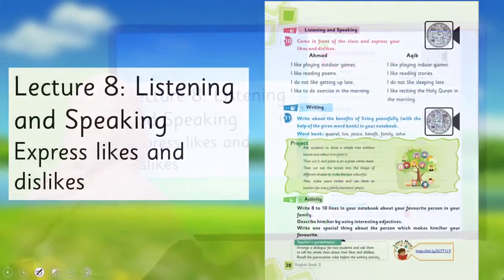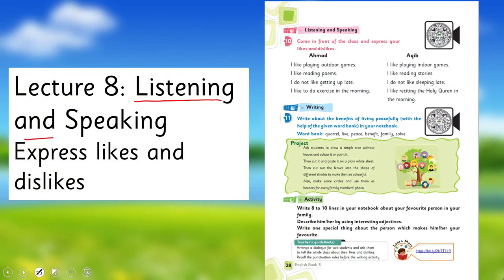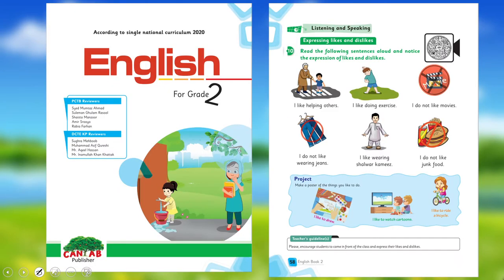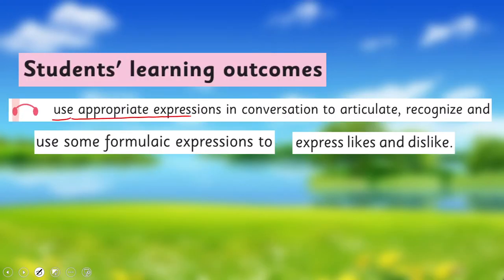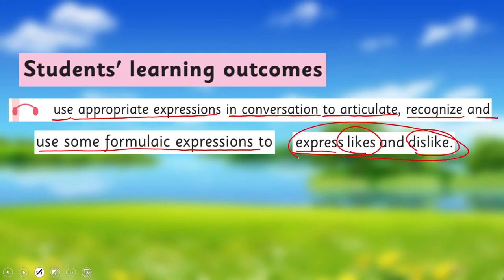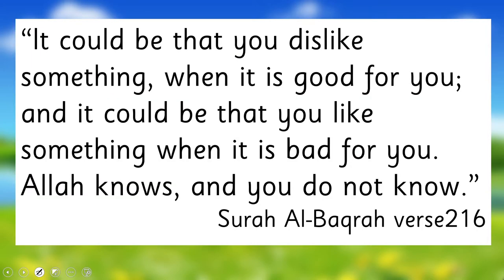Today, under the title of Listening and Speaking, we are going to learn how to express likes and dislikes. In English for Grade 2, I have already taught you expressing likes and dislikes — I hope you remember. If not, you may watch that video lecture again. Today we are going to learn further: to use appropriate expressions in conversation, to articulate, recognize, and use some formulaic expressions to express likes and dislikes. This is our today's SLO.